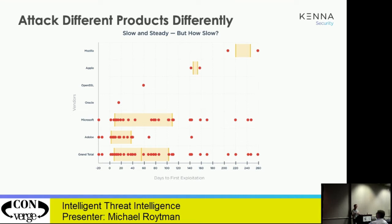This data tells me I need to go deeper and break it down by more products. But the takeaway is that attackers don't think about your environment in terms of CVSS — they think about what can we pop quickly. If your SLAs are based on risk criticality buckets, they're not aligned with what attackers are doing. You should be meeting Adobe criticals in seven days, Apple criticals in 90 days — and you're still meeting the mark based on the threat intelligence data that tells us what's actually risky.